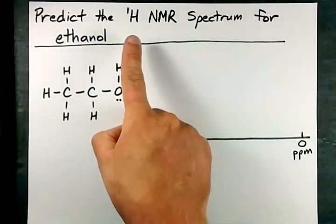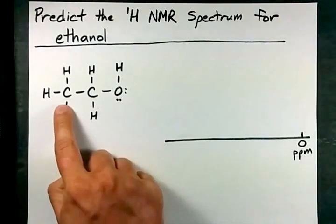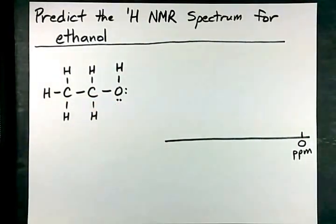We're going to draw together the ¹H NMR spectrum for ethanol, this molecule, which is two carbons single bonded together with an OH on it.